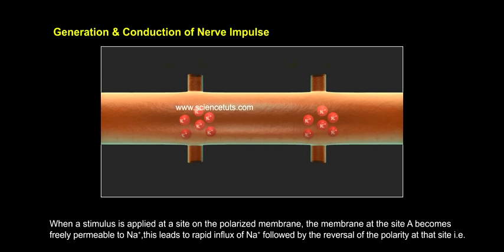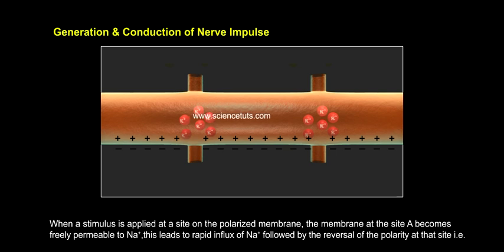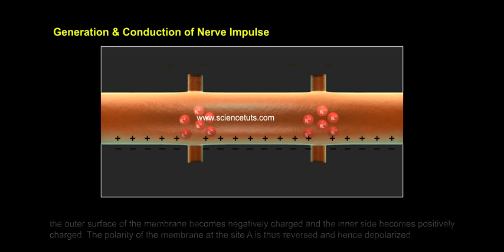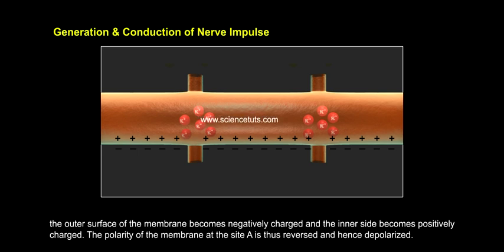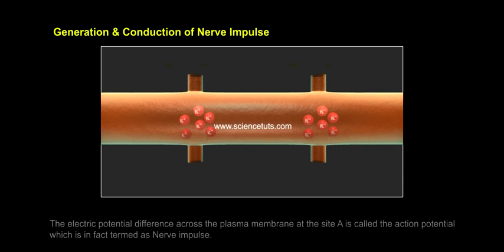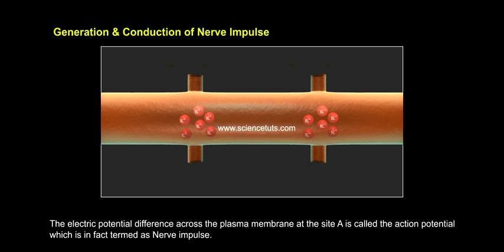When a stimulus is applied at a site on the polarized membrane, the membrane at site A becomes freely permeable to Na+. This leads to a rapid influx of Na+, followed by reversal of the polarity at that site — the outer surface of the membrane becomes negatively charged and the inner side becomes positively charged. The polarity of the membrane at site A is thus reversed and hence depolarized. The electric potential difference across the plasma membrane at site A is called the action potential, which is in fact termed the nerve impulse.